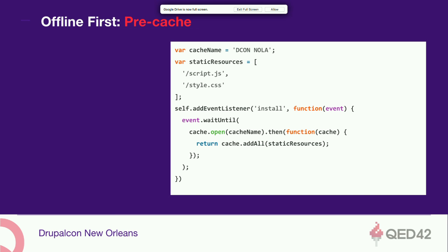Drupal enhancements we had to make: the first challenge was pre-caching aggregated CSS and JS files — in Drupal you can't easily get the names of those files since they're random hashes, so we created a custom route in Drupal 8. The second was writing a custom route to handle background sync operations for the 'add to schedule' flag feature, to post data back to Drupal. Third, caching session and sponsor URLs — we created two Drupal views with REST export format returning session.json and sponsors.json. We also used hook_page_attachments_alter to include the service worker JS and manifest.json.